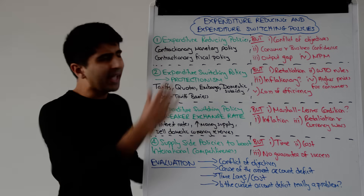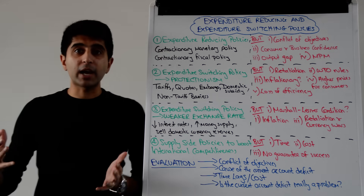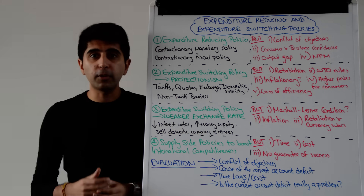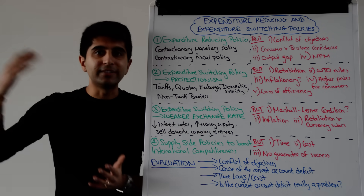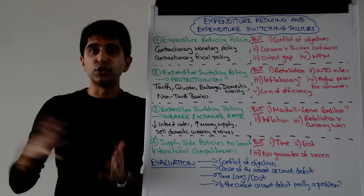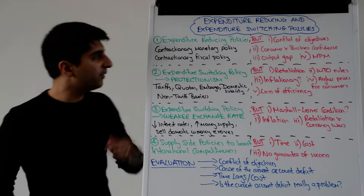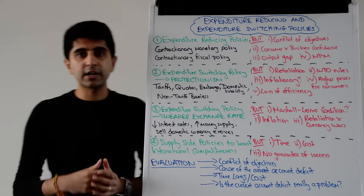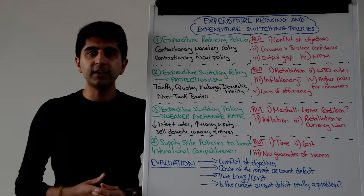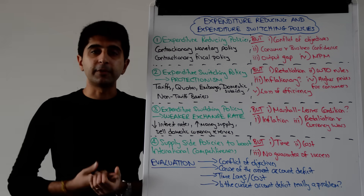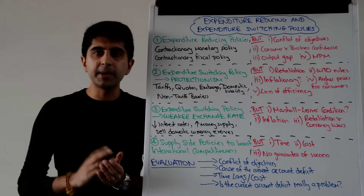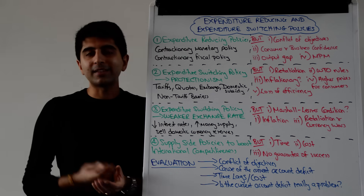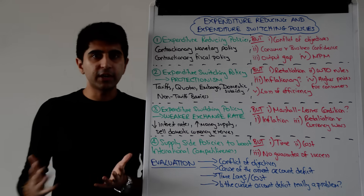What policies can help do that? Contractionary monetary and fiscal policies, because these policies will shift aggregate demand to the left, make incomes lower in the economy and thus reduce the marginal propensity to import and with that the expenditure on imports, helping to close the trade deficit and then the current account deficit. Examples of contractionary monetary policy: raise interest rates, reduce the money supply. Contractionary fiscal policy: reduce government spending, increase taxation levels.